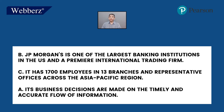First comes B: JP Morgan is one of the largest banking institutions in the US and a premier international trading firm — which is a generic statement about JP Morgan. Then C: it has 1,700 employees in 13 branches and representative offices across the Asia-Pacific region. And last, A: its business decisions are made on the timely and accurate flow of information.